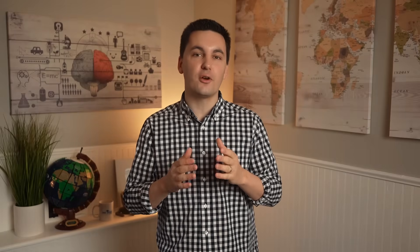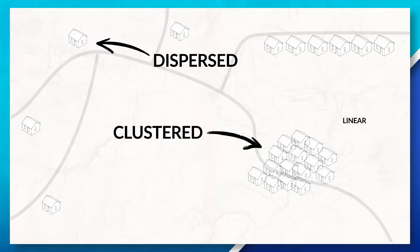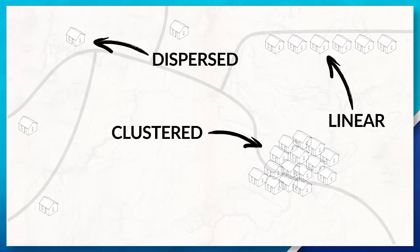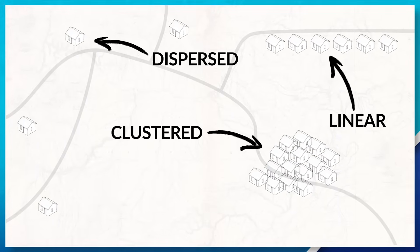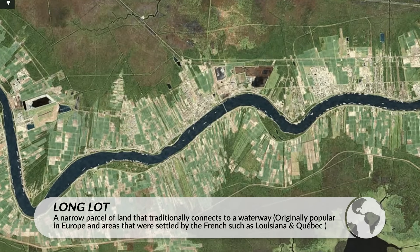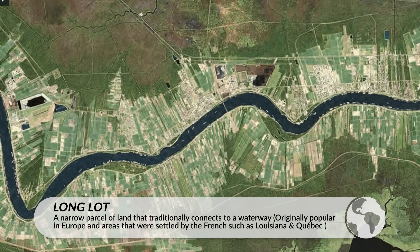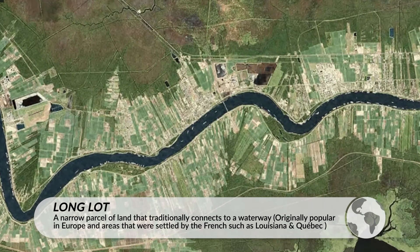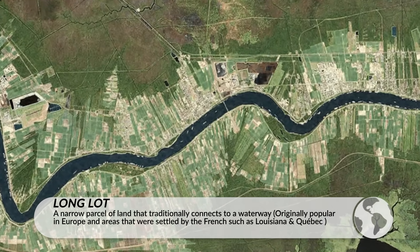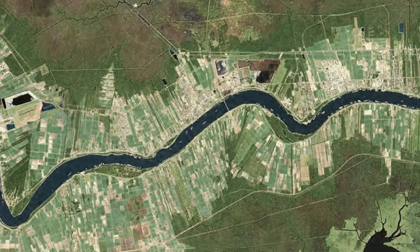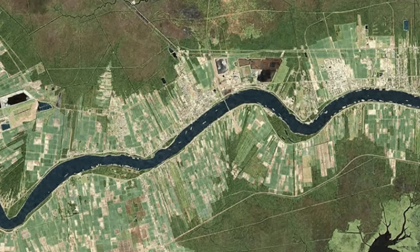Now that we've talked about settlement patterns, let's switch to survey methods. Going back to our linear settlement pattern, we can also see an example of the long lot survey method. This is when land is divided up into narrow parcels, with each parcel of land having access to either a river or a major road, in order for each parcel of land to have access to transportation.